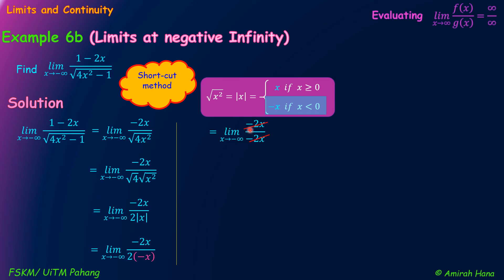We can simplify negative 2x in the numerator and negative 2x in the denominator. This gives us the limit as x approaches negative infinity of 1. Since we have the limit of a constant, there is no x to substitute. So the final answer equals 1.